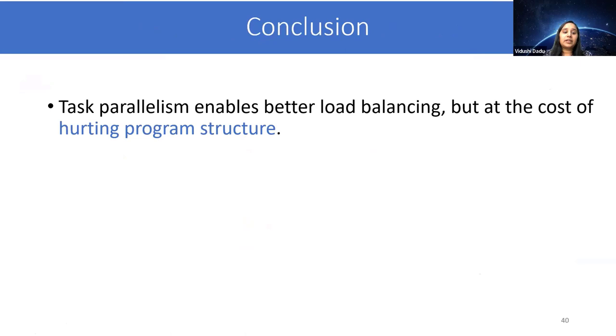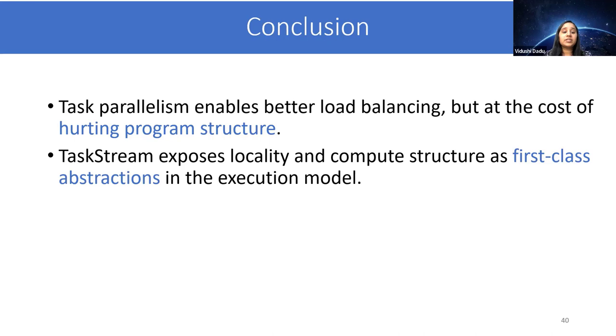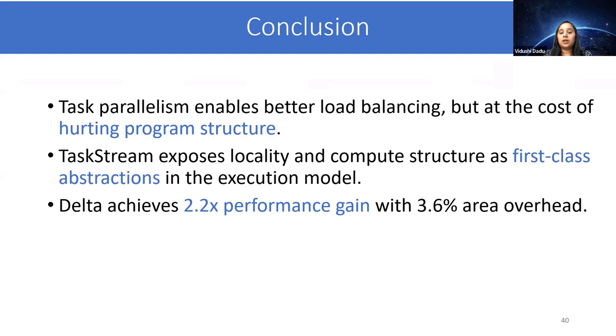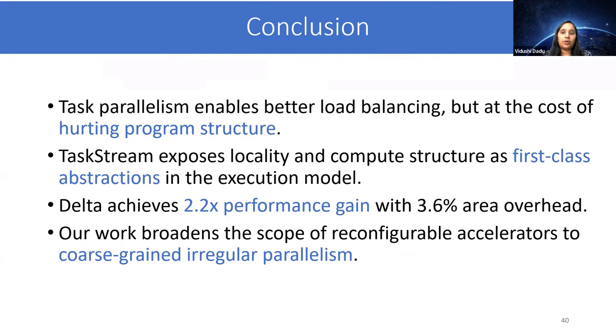In conclusion, task parallelism enables better load balancing, but at the cost of hurting program structure. Our TaskStream execution model exposes locality and compute structure as first-class abstractions in the execution model. We achieved 2.2x speedup over the static parallel version. Finally, our belief is that in order for accelerators to be successful and broadly adopted, they need to be efficient on a wide variety of workloads. Supporting task parallelism in such accelerators is definitely one step towards that direction. Thank you.